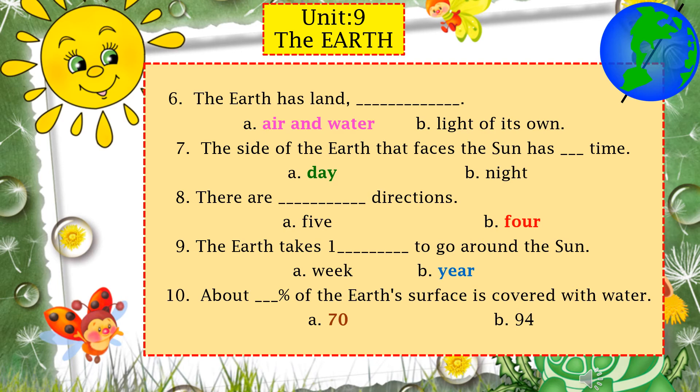Number nine: the earth takes one dash to go around the sun — one what — week or year? Yes, Option B: year. One whole year means 365 days. So it takes one year to go around the sun.